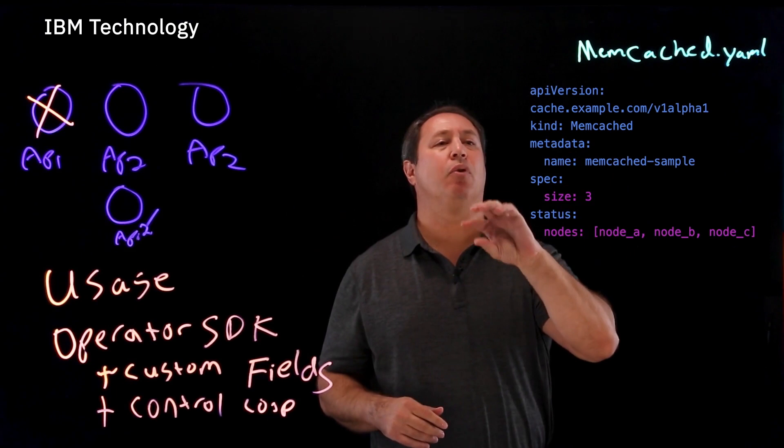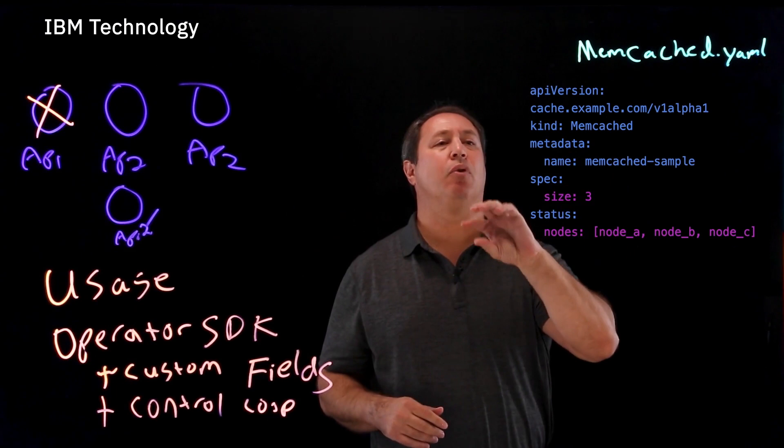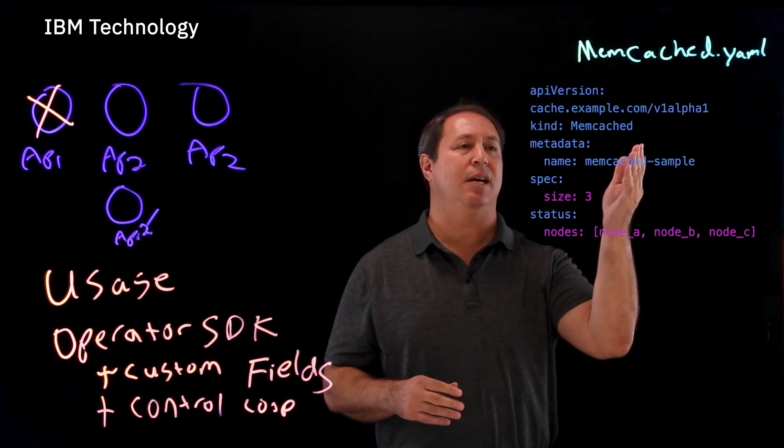Think of the spec section as the parameters that you're passing into your custom resource, sort of telling it what to do. And in this case, it's size, which is the number of memcached applications we want.